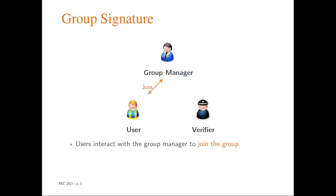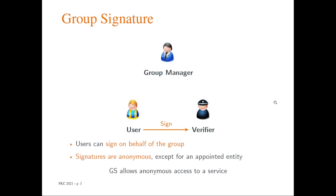A group signature scheme allows a user to join a group managed by a group manager by interacting with this entity. At the end of the interaction, the user receives a signing key which essentially consists of some certificate that attests that the user has indeed joined the group. Once they have joined the group, users can sign on behalf of the group.